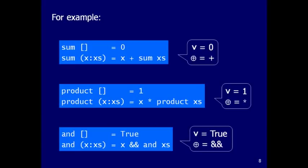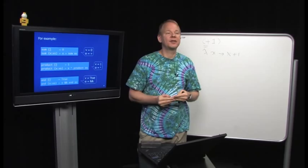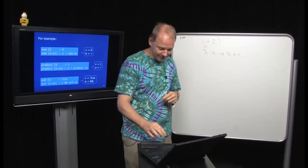Another example is `and`, which ANDs all elements of a boolean list. For the empty list we return `True`; for a non-empty list starting with `x` and `xs`, we take `x && (and xs)`. So the value for the empty list is `True` and the combining operator is `&&`. We now have five functions over lists — map, filter, sum, product, and — all following the same recursion pattern.